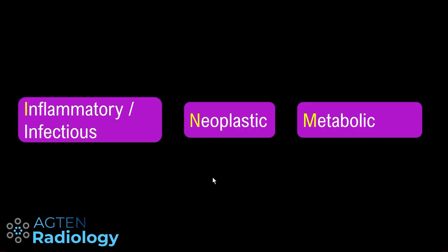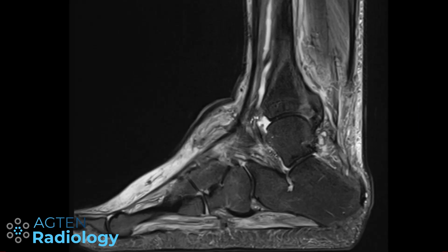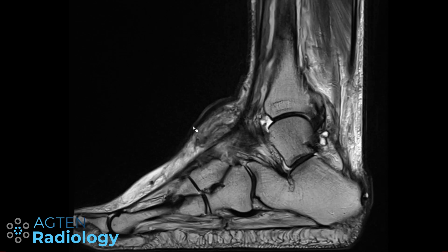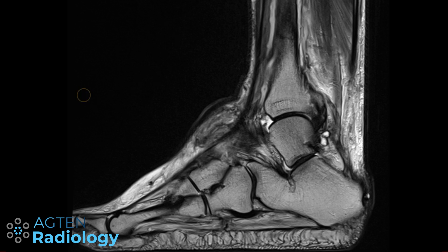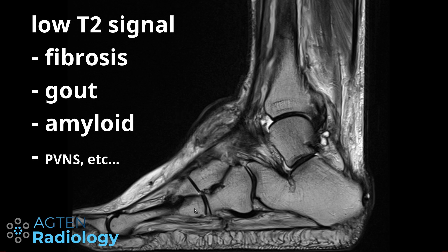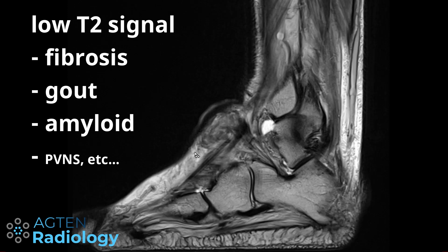From a metabolic point of view, the key finding is the very low T2 signal intensity, which is quite important because not many things produce very low T2 signal. The first consideration is a fibrotic process — fibrosis is nonspecific and can be reactive or degenerative. There are also some tumors with very low signal intensity. We should also think about gout and amyloid depositions, both of which can show very low T2 signal intensity.